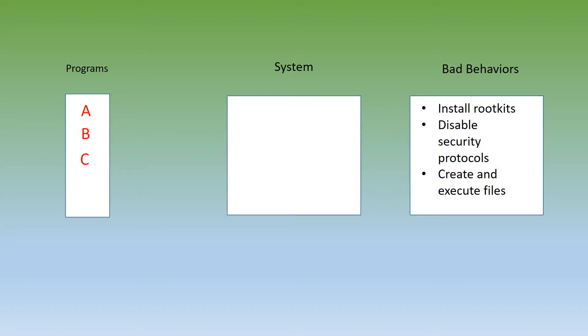In behavioral-based detection, the system will watch and analyze a program execute its code, and the system will look out for any specific actions that the program may do. In our scenario, the system will look out for these types of behaviors, and if the program executes any of these behaviors, the system will label it as malicious.